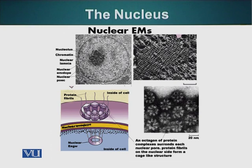On the screen you can see the structure of nuclear pores. The nuclear pores, as I mentioned, have octagonal symmetry. Here is an electron micrograph of a nuclear pore. You can also see the nuclear lamina in this electron micrograph of the nucleus.